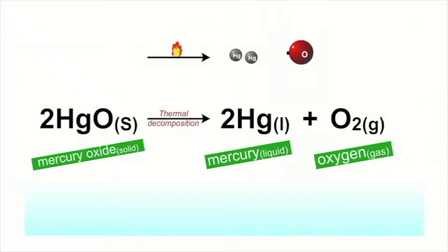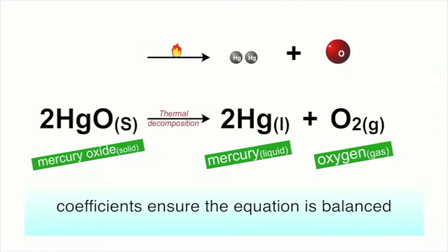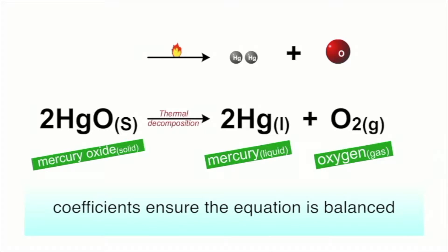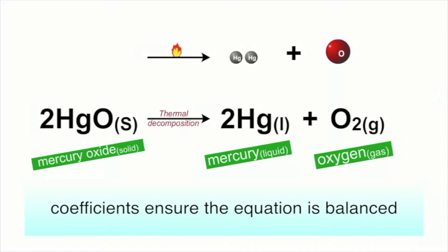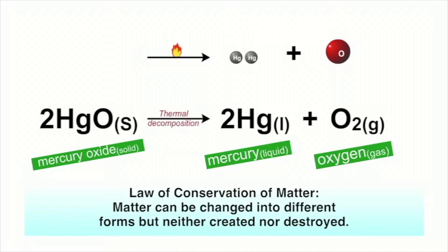Besides the letters indicating the matter state, notice that there are numbers in front of the formula for mercury oxide and mercury. The purpose of these numbers, called coefficients, is to balance the equation to indicate that it obeys the law of conservation of matter.